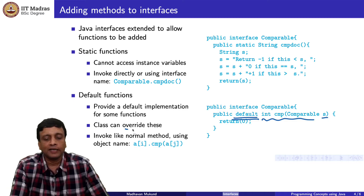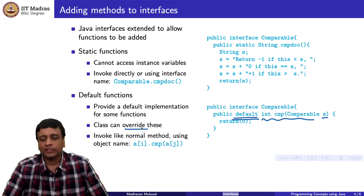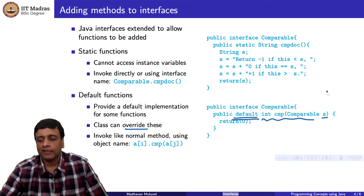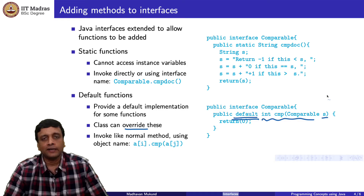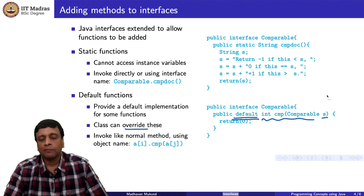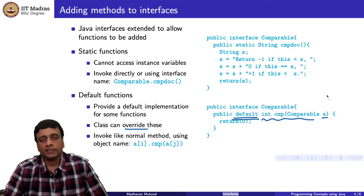The class should typically override such a function. The useful case is when there are three or four functions in the interface and in some situations some of those functions are not meaningful. Classes can implement the interface but only implement a few of the functions, and the others will retain their default values, mainly because you do not expect to call them in the context of such objects. So there are situations where default values are useful.